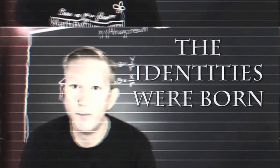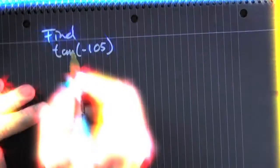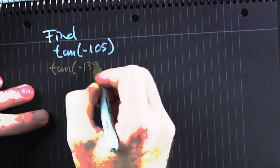And this is where the identities were born. We're going to have to evaluate the tangent of minus 105 degrees exactly.